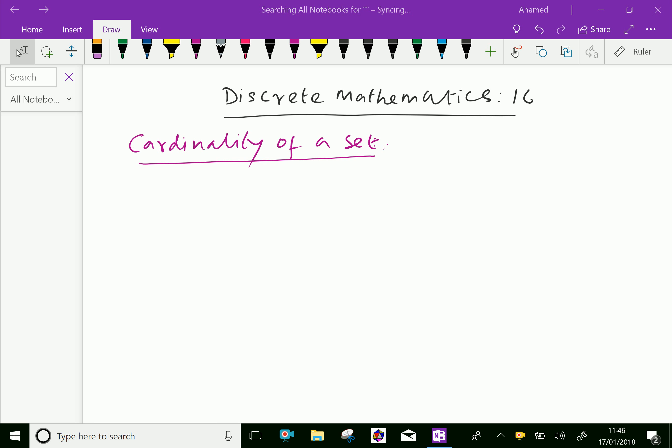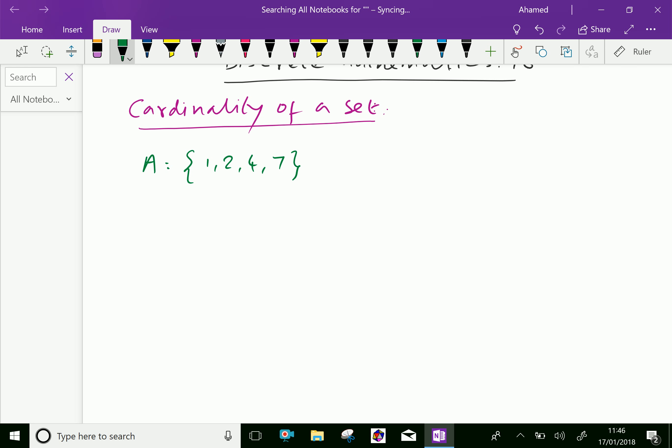Cardinality of a set is the number of elements in a particular set. Consider set A = {1, 2, 4, 7}. Here, set A has four distinct elements. Therefore, the cardinality of set A, denoted |A|, equals 4.